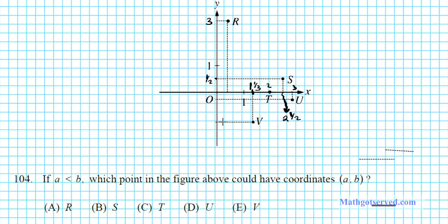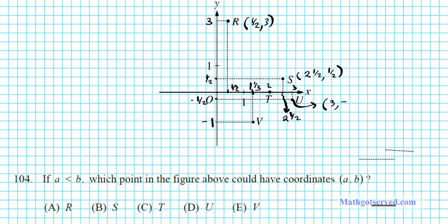We can call this one negative 1, and the next one negative 1/2, and then positive 1/2. So all these values I put on the axis help me assign concrete coordinates to our points. Point R: x-coordinate is 1/2, y-coordinate is 3. Point S: x is 2 and a half, y is 1/2. Point U: x is 3, y is negative 1/2. Point T: x is 2, y is 0. Point V: x is 1 and a third, y is negative 1.